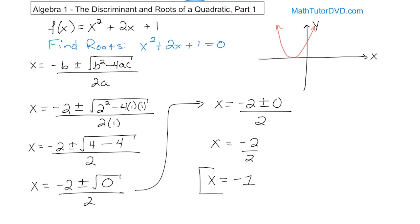Here's the part where it confuses a lot of students. The theory of math says that when you have an x-squared term, you always expect two solutions. But clearly here we only got one. Really though, we have two solutions here — it just so happens that both of them are negative 1. Look back: what we really had was negative 2 plus 0 over 2, and separately, negative 2 minus 0 over 2. In both cases it still gave us negative 1, but there were two answers. If this number were anything other than zero, it would have given us two distinct solutions like always.